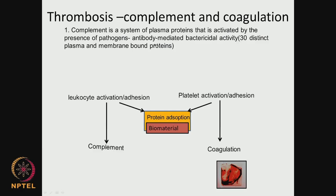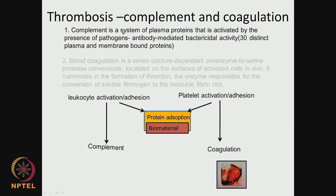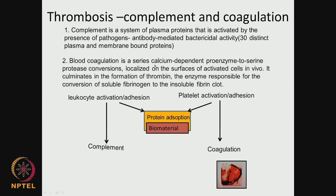There are 30 distinct plasma and membrane-bound proteins in the complement system. These proteins are found in plasma and in membrane. Their job is to try to identify pathogens, bacteria, and foreign bodies, so that they can be attacked by the host immune system. That is what the complement means. Then next is coagulation — this is a series of calcium-dependent proenzyme to serine protease conversion localized on the surface of activated cells, happening in vivo. Finally there is formation of thrombin.